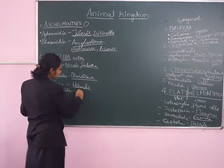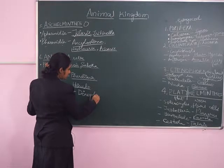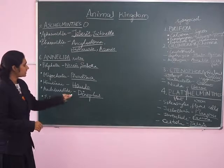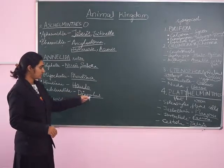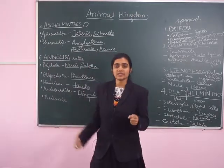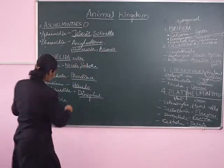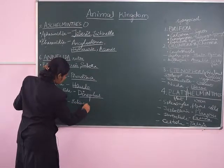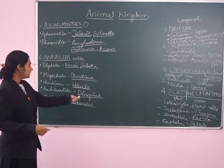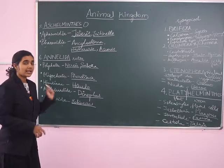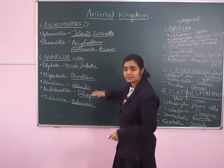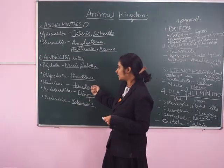Archi-annelida — 'archi' meaning old — are one of the most primitive annelids. They are mostly marine, sea-dwelling worms. One example is Dinophilus. Echiuridae members are not segmented worms — there is no external or internal segmentation in these worms. One example is Echiurus. The rest of the annelidan classes have both internal and external segmentation, though they may or may not match. In the case of archi-annelids, the external and internal segmentation does match.